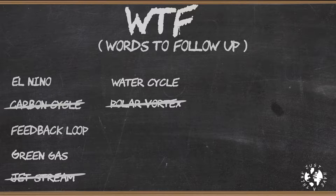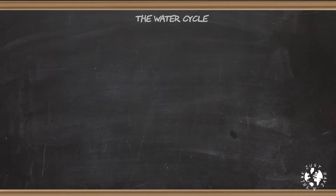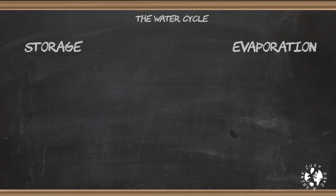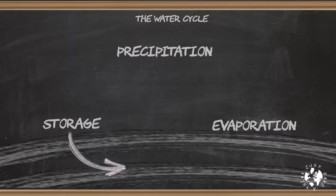The principles of the water cycle are pretty straightforward and fairly self-evident. They can be summarised using three main headings: storage, evaporation, and precipitation. Water is stored in various geographical reservoirs like lakes, rivers, oceans, glaciers and reservoirs. There's also water stored in the ground itself and in underground aquifers, and this water can take thousands or even millions of years to make its way back up to the surface.